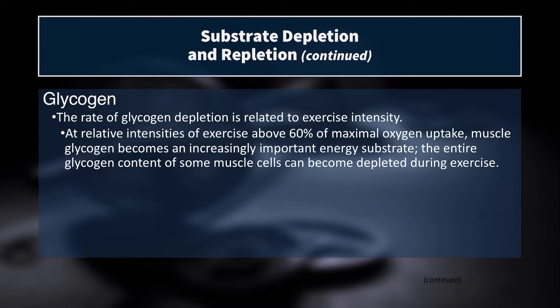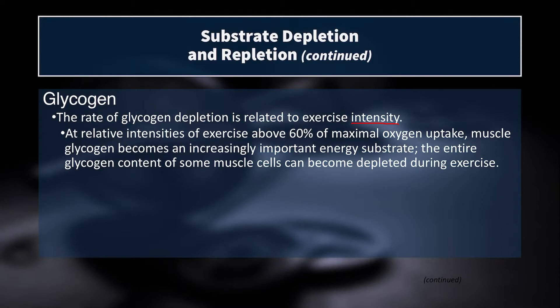For the glycogen system, the rate of glycogen depletion is related to exercise intensity — you'll deplete it much faster during a 10K or half marathon than during an ultra-endurance run or walk. At relative intensities above 60% of maximal oxygen uptake, muscle glycogen becomes increasingly important. At the end of performances, the entire glycogen content of some individual muscle cells can become completely depleted.